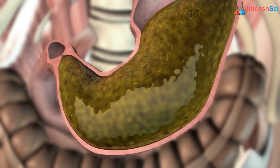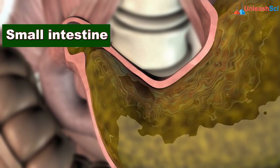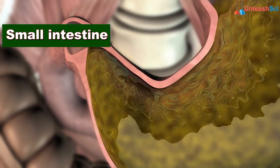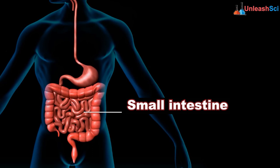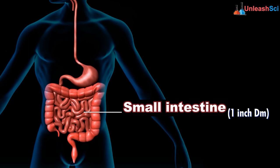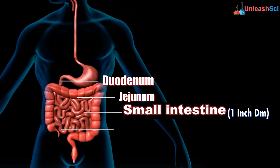The food digested in the stomach passes to the small intestine and is called chyme. The small intestine is termed small because it is only one inch in diameter. The small intestine can further be divided into the duodenum, jejunum, and ileum. Maximum absorption of food occurs in the small intestine.